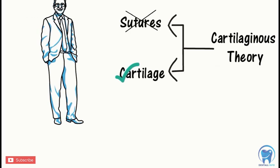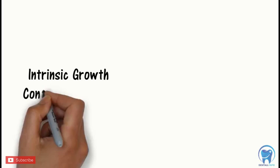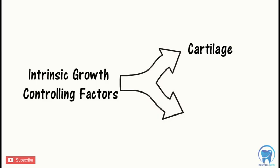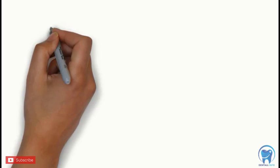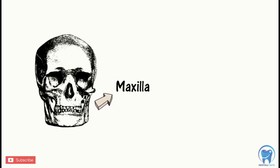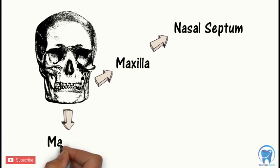So according to the cartilaginous theory, the intrinsic growth controlling factors were mainly located at two sites: the cartilage and the periosteum. After studying the facial growth in detail, it was proposed that the primary growth center of the maxilla lied in the nasal septum, and the primary growth center of the mandible lied in the condylar cartilage.